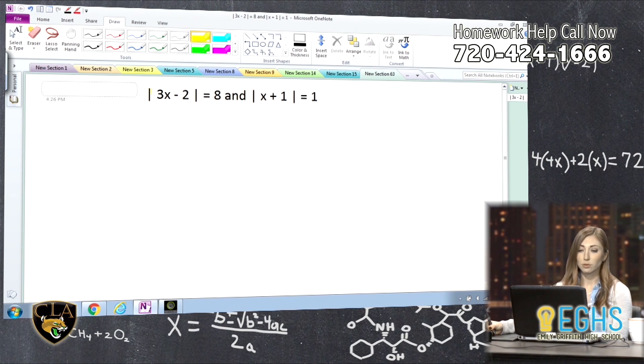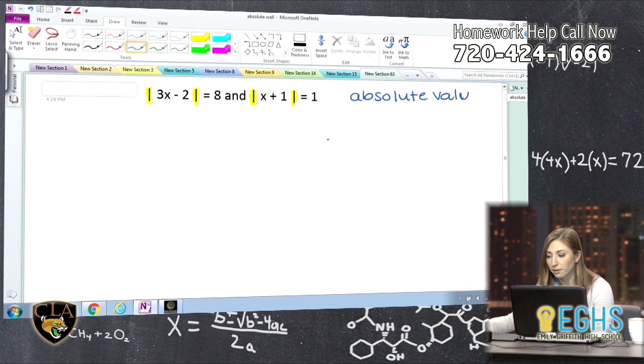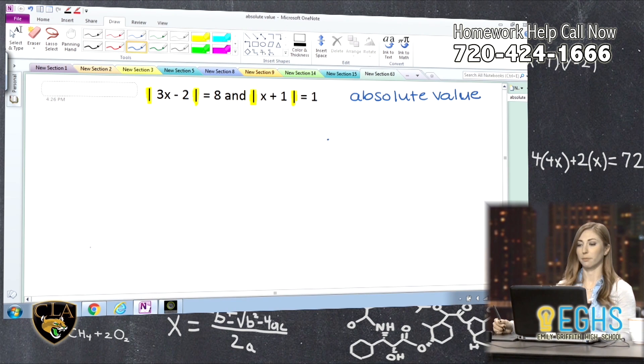So the first thing that we'll talk about is what are these bars, these little lines. They may look like parentheses, but like somebody forgot to curve them or something. They mean a little bit more than parentheses. What they are is they're called absolute value.